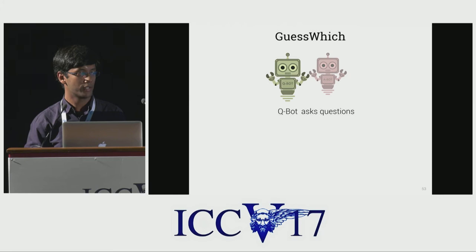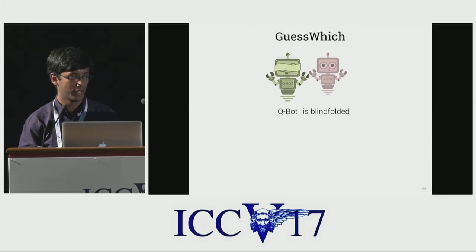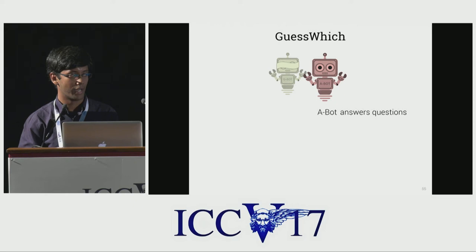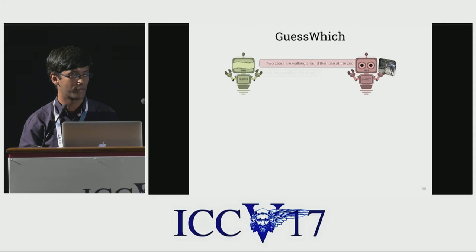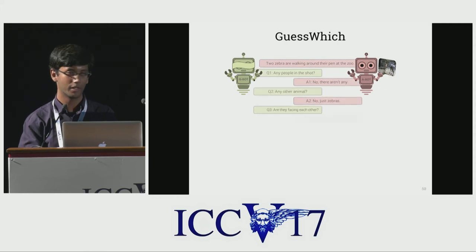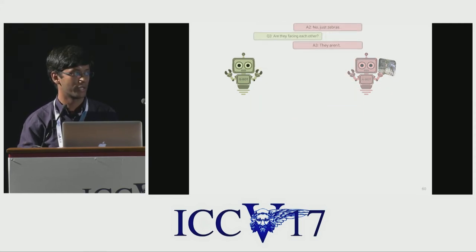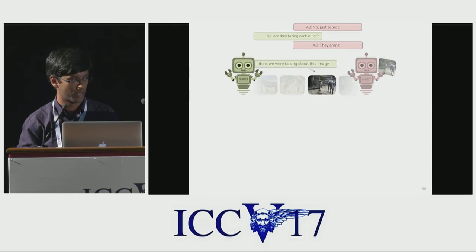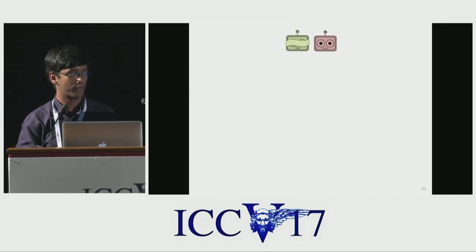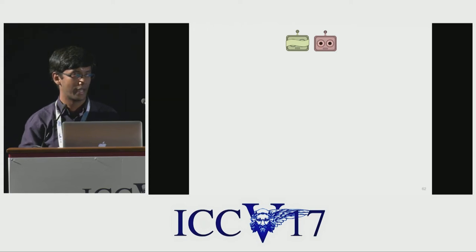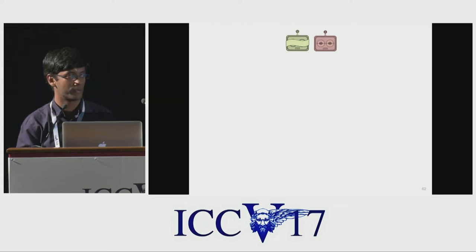Qbot is a questioning agent and is blindfolded, so it cannot see images. Abot is an answering agent and has access to the secret image. The task is for Qbot and Abot to talk to each other for a fixed number of rounds in natural language, at the end of which Qbot makes a guess of what it thinks the secret image is. This training framework has several advantages and solves some of the problems mentioned earlier.